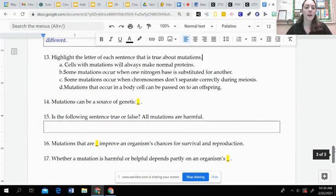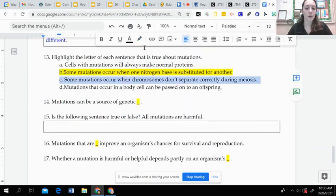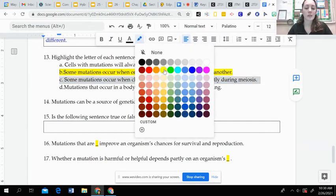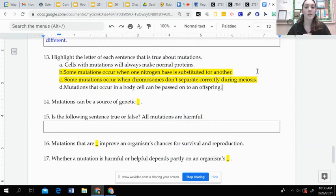Question 13, you are highlighting the letter of each sentence that is true about mutations. So some mutations occur when one nitrogen base is substituted for another. And some mutations occur when the chromosomes don't separate correctly during meiosis. There's a couple other ways that mutations can occur. They can separate or substitute the bases. They can add a base in or they can delete the base. So you're going to have that gap or an addition that changes the order in the process. Mutations can be a source of genetic variety.